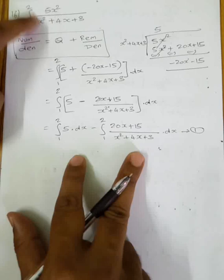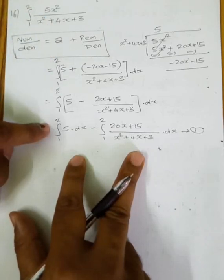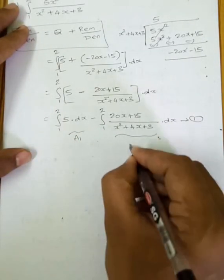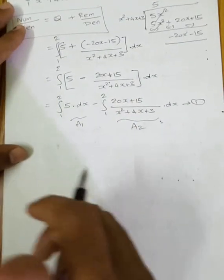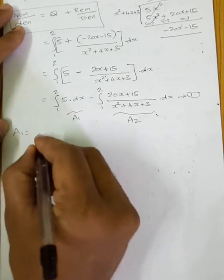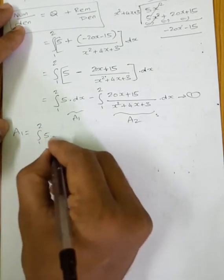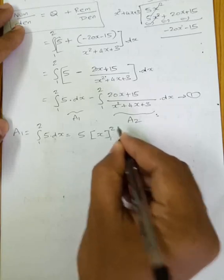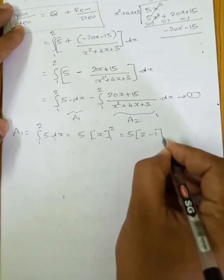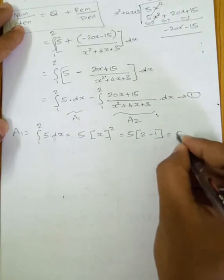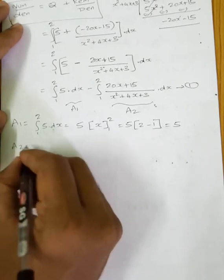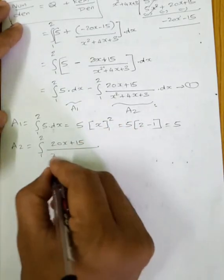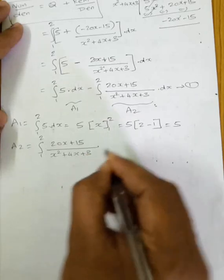We split into two parts: A1 and A2. A1 equals integration of 1 to 2 of 5 dx, which is 5 into x from 1 to 2, giving 5 into (2 minus 1) = 5. A2 equals integration of 1 to 2 of (20x+15)/(x²+4x+3) dx.